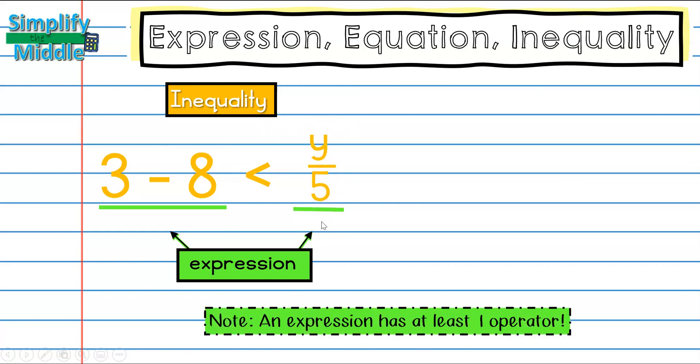Remember, an expression has to have at least one operator. Here we have y over 5, which really means y divided by 5, because a fraction bar represents division. Division is an example of an operator.